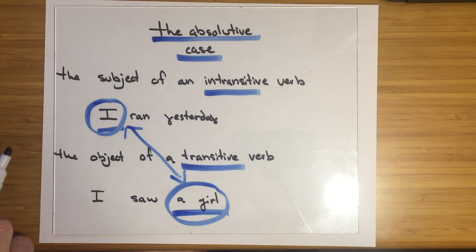Really quickly, some people see the logic of the absolutive case. Both of these positions, I saw a girl and I ran yesterday, are somehow maybe a little bit less active. Because if you're running, you're not acting on anything else.